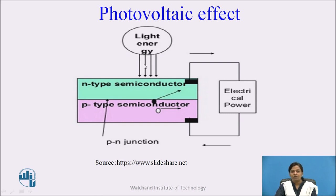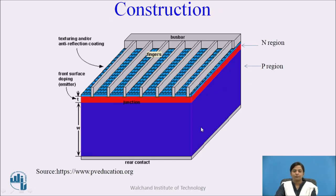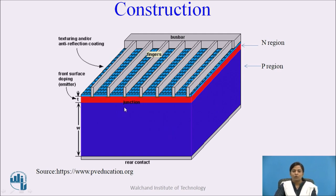As the intensity of light increases, the voltage also increases. Solar cells are mainly constructed by using crystalline silicon, which consists of P-type and N-type semiconductors. These P-type and N-type semiconductors are sandwiched to each other, forming a P-N junction between the P- and N-type semiconductor.